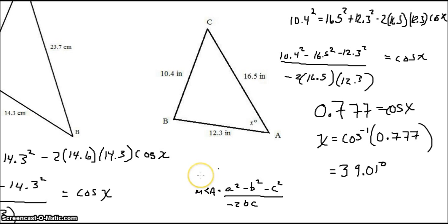divided by negative 2 B C. Oh, not quite. We have to take the inverse cosine of that. Yeah, this is our formula for always finding the unknown angle.